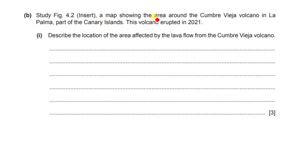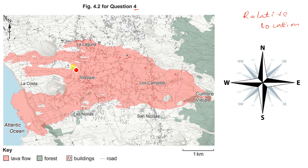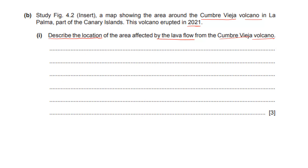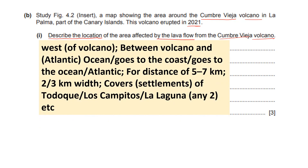The key shows that the pink color represents lava flow, green represents forest, buildings are shown between the lava flows, and roads are also shown. The question asks you to study figure 4.2, a map showing the area around the Cumbre Vieja volcano in La Palma, part of the Canary Islands — which erupted in 2021. Describe the location of the area affected by the lava flow. The lava flow moves westward from the volcano toward the Atlantic Ocean, passing through areas such as La Laguna.